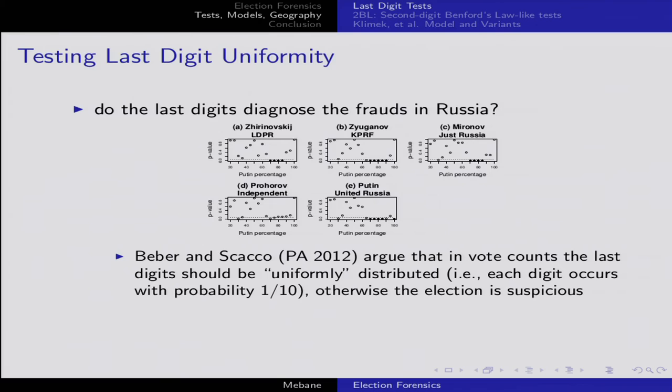Beber and Scacco have a test published in Political Analysis in 2012, arguing that you can use the last significant digits of vote counts to test for fraud. They also had a Wall Street Journal op-ed arguing the Iranian election in 2009 was fraudulent because of the last digits. There's more to that story, but it's kind of embarrassing for them.